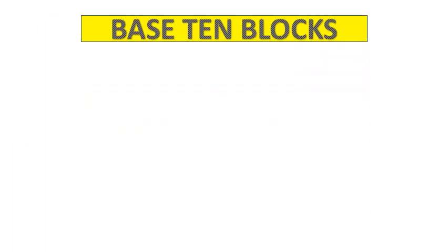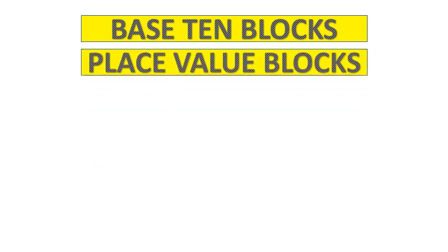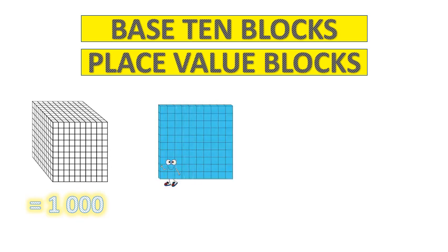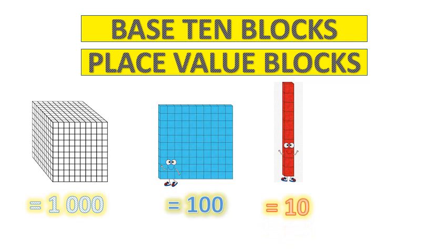Base ten blocks, commonly known as place value blocks. These are a set of four different types of blocks that, when used together, can help you to see what a number looks like and understand its value. Let's take a look at our base ten blocks. This block represents one thousand. This block represents one hundred. This block represents ten. And finally, this block represents one.